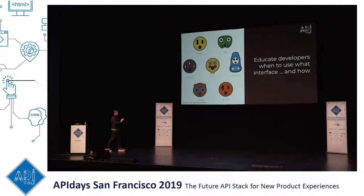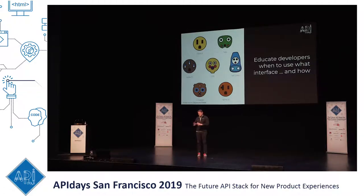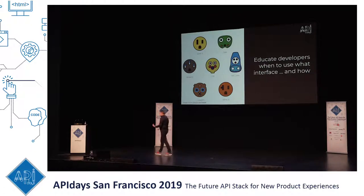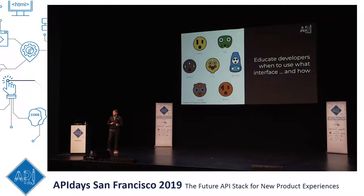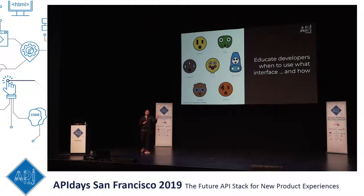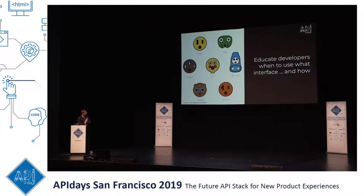Last thing: educate developers on when to use which interface and how. If you have a bunch of different interfaces, it's really important to educate people how to use them. For example, we have webhooks and we have GraphQL subscriptions — effectively the same communication mode, a push notification. However, the fundamental difference is GraphQL allows not only server-to-server communication but server-to-client communication. So for everybody who needs push notifications, they can skip the server side and go right through to the mobile phone, instead of going through webhooks with server-to-server and then server-to-mobile communication. There are a bunch of architecture trade-offs you want to educate developers on.